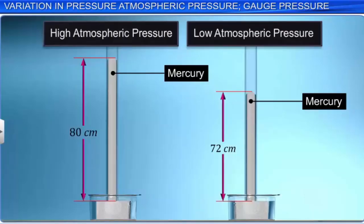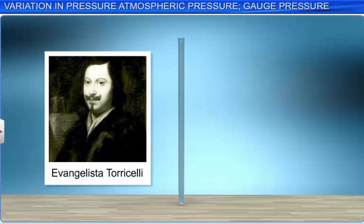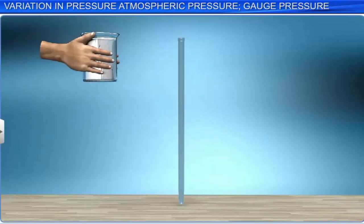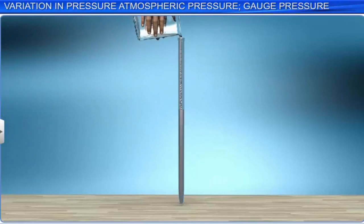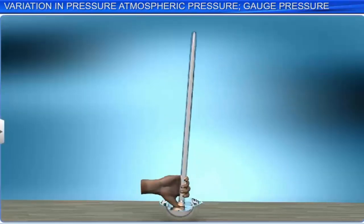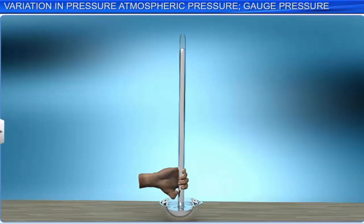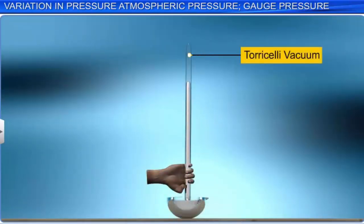The device used to measure atmospheric pressure is called a barometer. Torricelli devised a mercury barometer: a long glass tube closed at one end is filled with mercury and then inverted into a glass trough containing mercury. The mercury column in the tube falls to some extent and a vacuum — the Torricelli vacuum — is created. The height of the mercury level in the tube is nearly 76 cm or 760 mm above the free level of mercury in the trough, which is equivalent to one atmosphere.